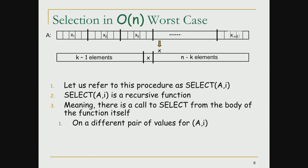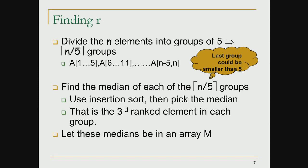We refer to this algorithm as a select procedure. The procedure has two arguments: an array a and a rank i. The output is the value of the ith ranked element in the array a. Select is a recursive function — a function which makes calls to itself with different parameters. We partition the array based on an index r by taking the n elements and dividing them into n/5 groups: elements with indices 1 to 5, elements a[6] to a[11], and so on up to a[n-5] to a[n].